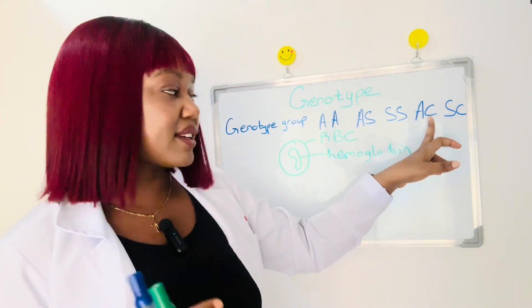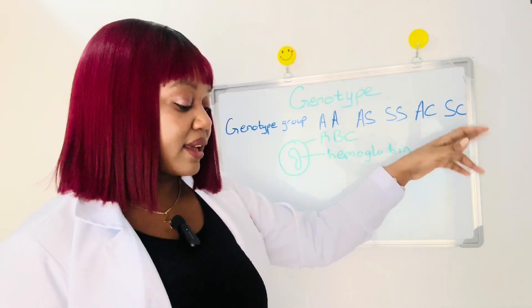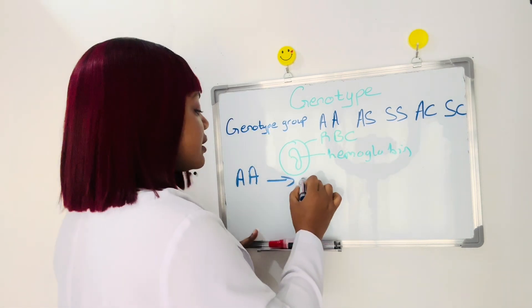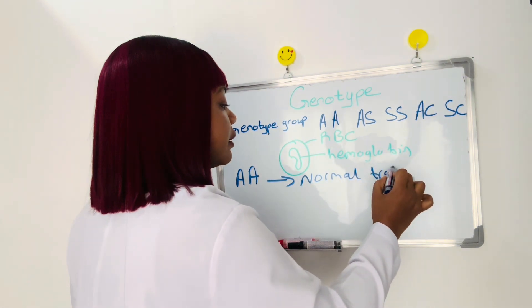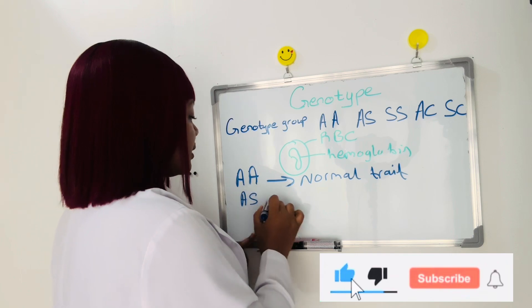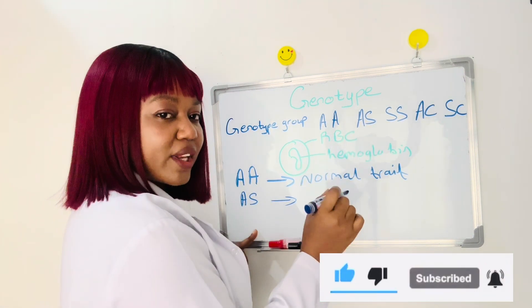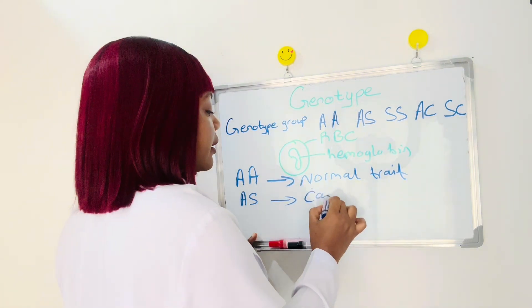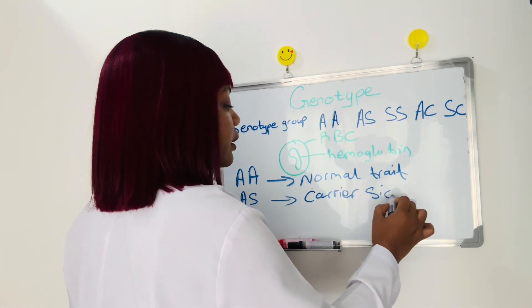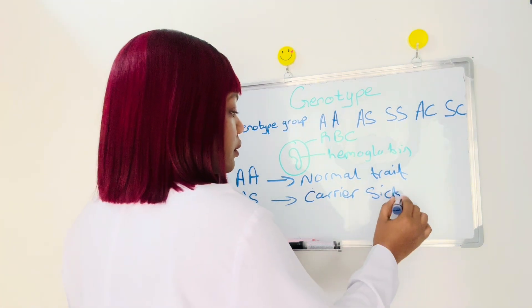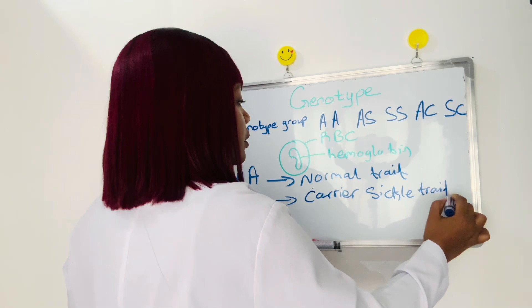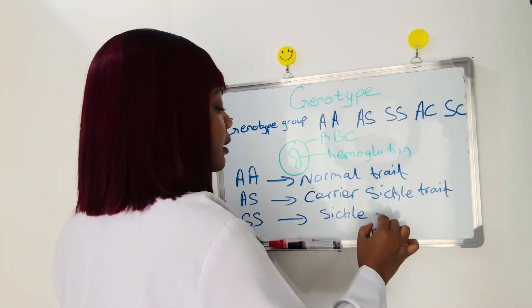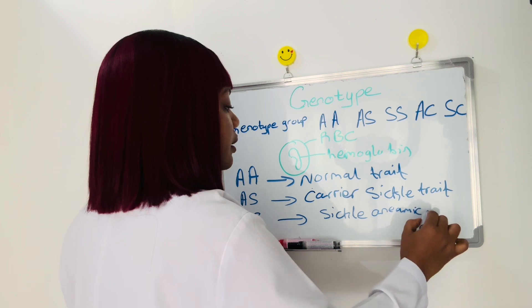Someone having AC — like I said, AC is another form of trait, and AS is also another form of trait. AA is someone with a normal trait. Someone with a genotype of AS has a single trait, already signifying this person carries sickle cell in them — they are a carrier of the sickle cell trait. Someone with SS is already a sickle cell anemic person.